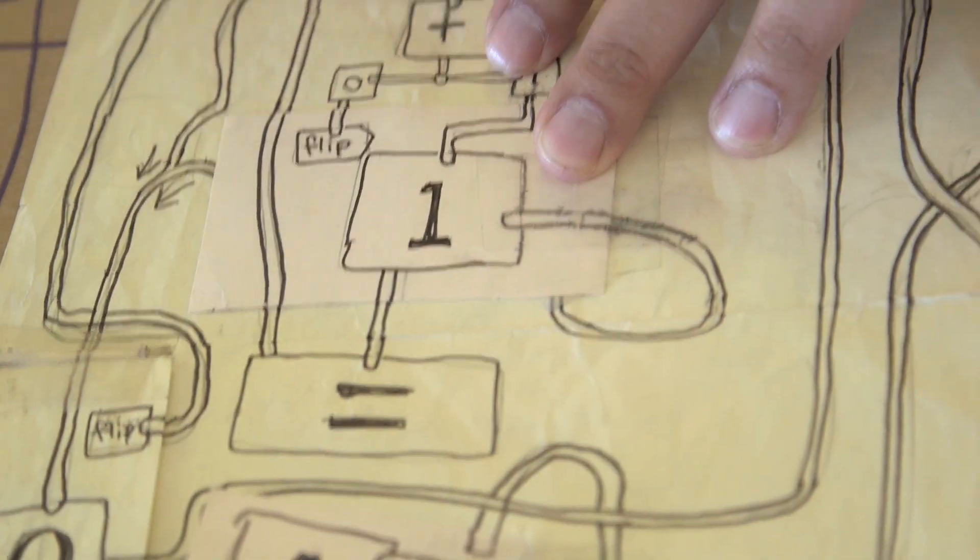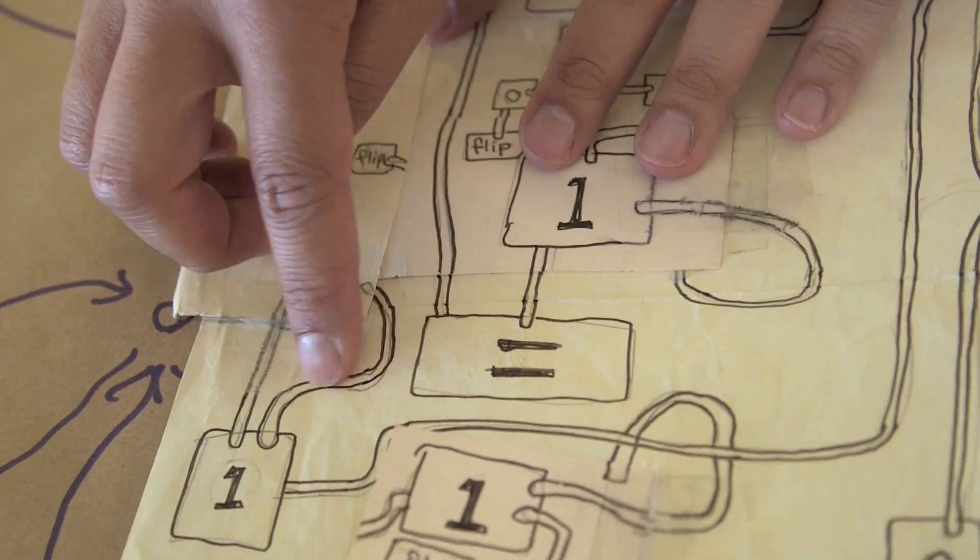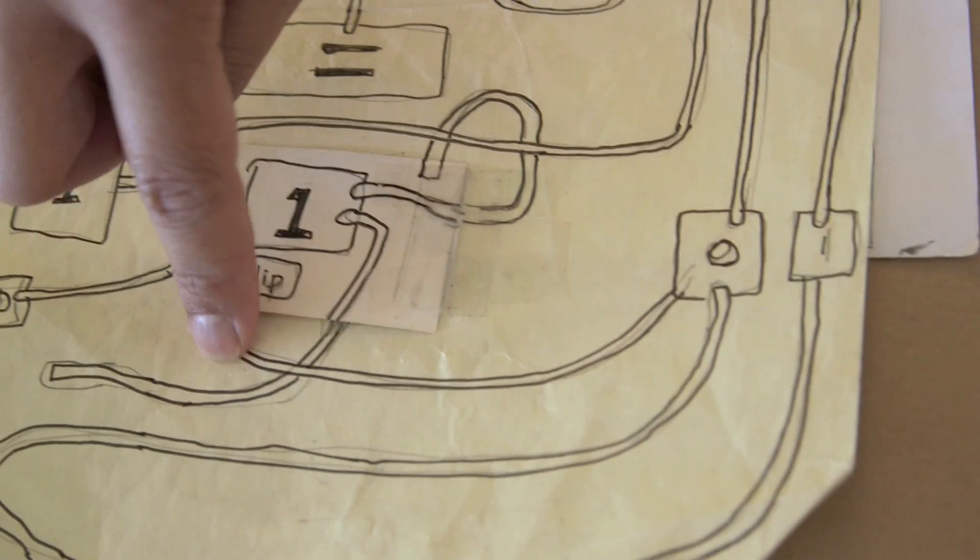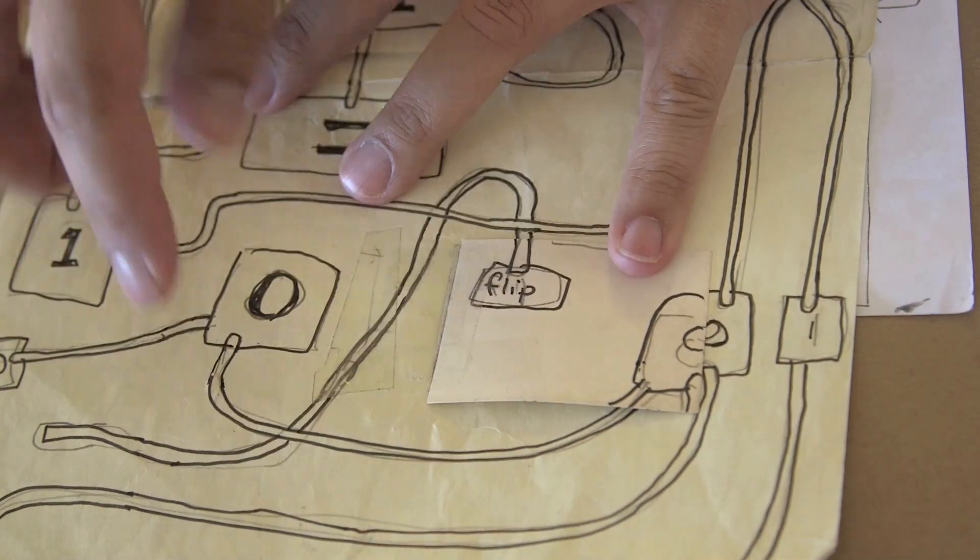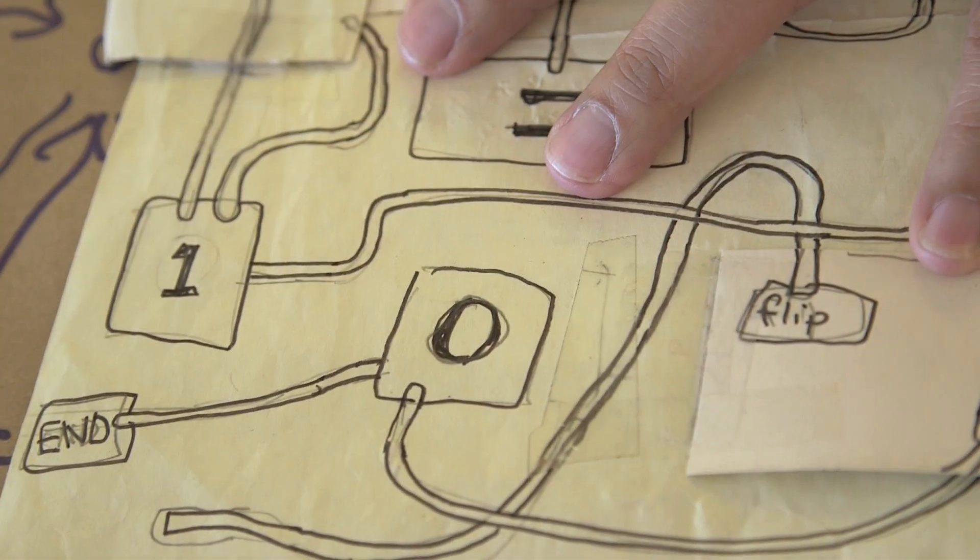That goes to the equal sign. It tells me to flip. Tells me to flip again. And there's our answer. One, zero, or two in binary.